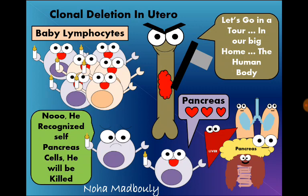Every lymphocyte has a specific receptor on its surface that will identify only one antigen. This antigen might be a bacterial, viral, or fungal antigen. Through the journey, the cells that recognize self-antigens — like lung, kidney, or pancreas antigens — will be killed, and this clone will be deleted forever.